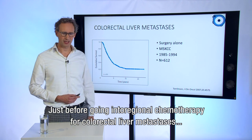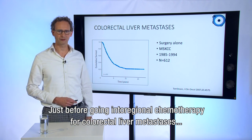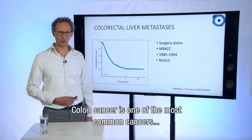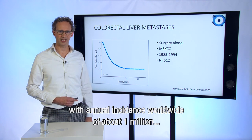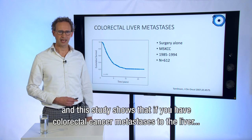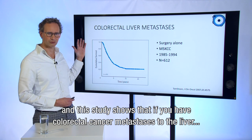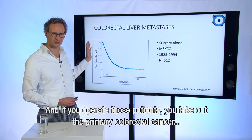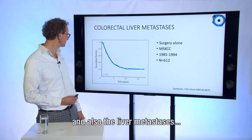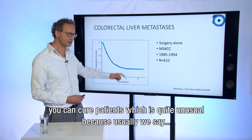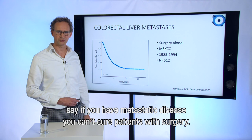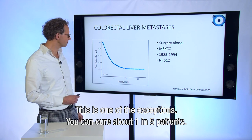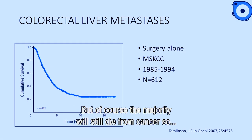Before going into regional chemotherapy for colorectal liver metastasis, I need to share a little background. Colon cancer is one of the most common cancers with an annual incidence worldwide of about one million. This is an old study, but what it shows is that if you have colorectal cancer metastasized to the liver and you operate those patients — taking out not only the primary colorectal cancer but also the liver metastasis — you can actually cure patients, which is quite unusual because usually with metastatic disease you can't cure patients with surgery. You actually cure about one in four or one in five patients, but the majority will still die from cancer.